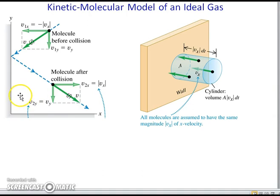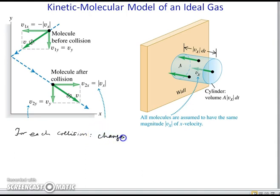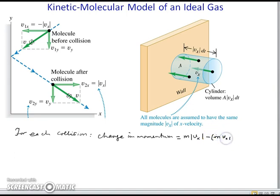For each collision, there is a change in momentum. The change in momentum is equal to m|Vx| minus (−m|Vx|), giving a total change of 2m|Vx|. So 2m|Vx| is the change in momentum for each collision.